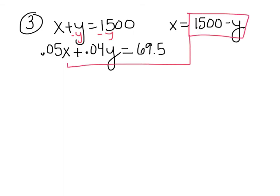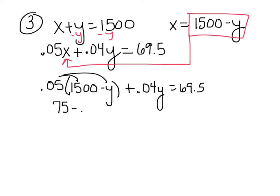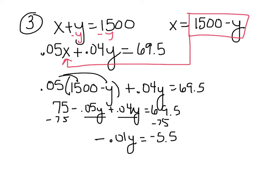I'm going to take this and I'm going to plug it in right here for X. So then I would get 0.05 times the quantity 1500 minus Y plus 0.04Y equals 69.5. Distribute, that gives me, I believe that's 75 minus 0.05Y plus 0.04Y equals 69.5. Combine like terms. And I'm going to subtract the 75 to the other side as well. So negative 0.05 plus 0.04 is negative 0.01Y equals 69.5 or $69.50 minus $75. That gives me negative 5.5. I divide by negative 0.01. That gives me Y equals 550.